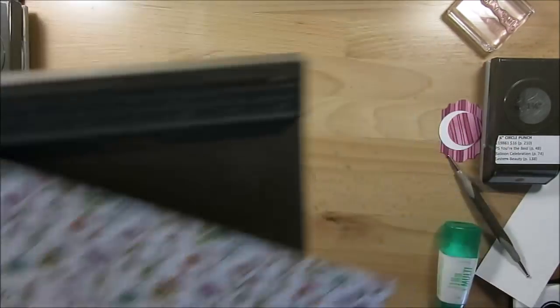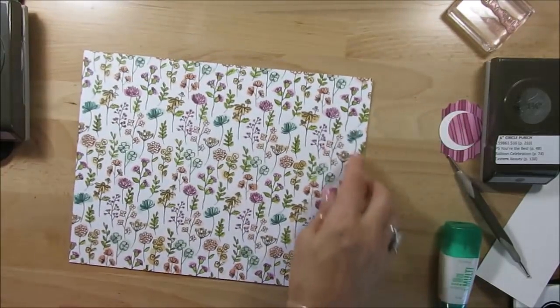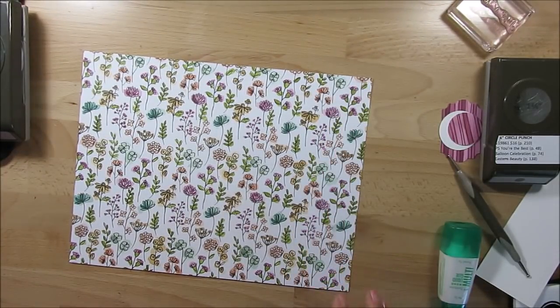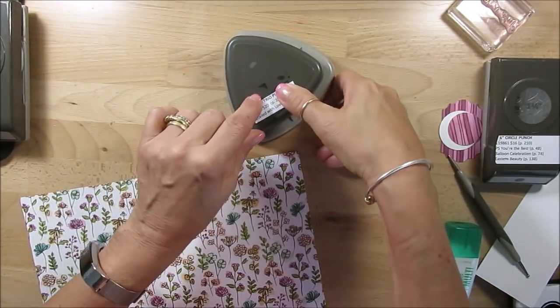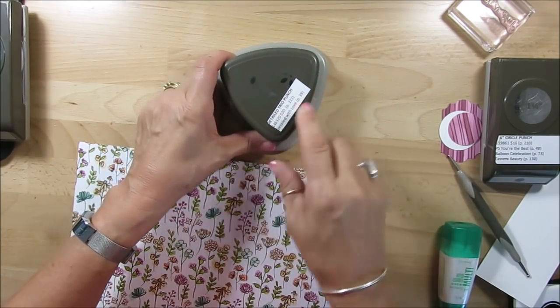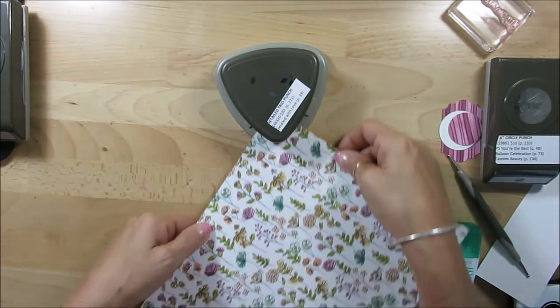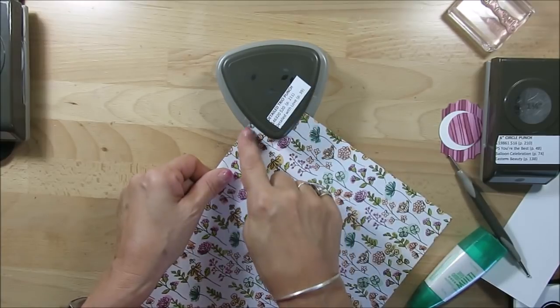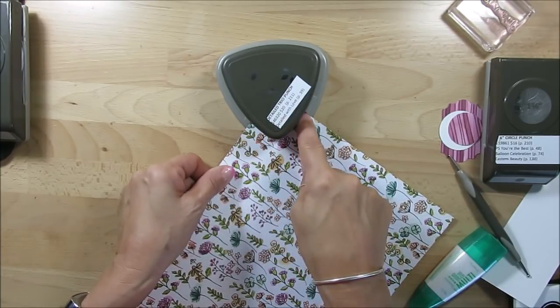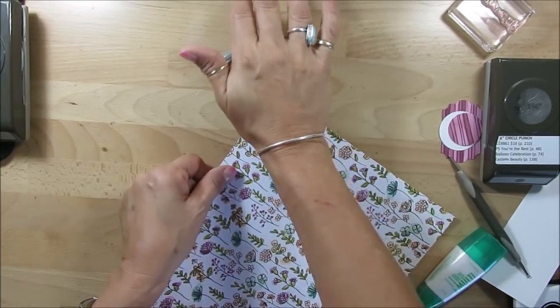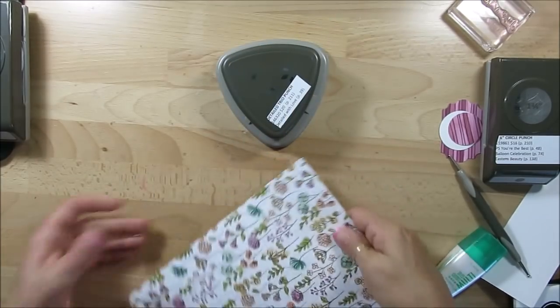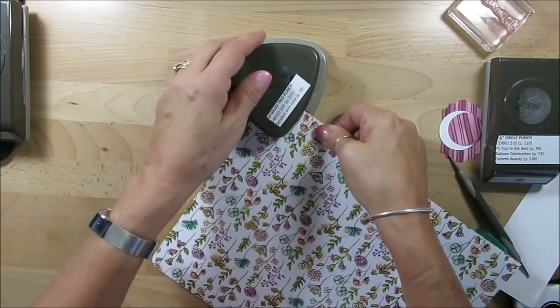Now I like to round my corners. I don't like the square corner. This is the Detail Trio punch right here. So you want to make sure that you go very square - you get the slot right there. Punch. So we're going to do four sides.